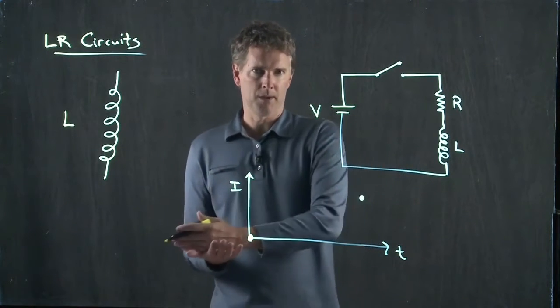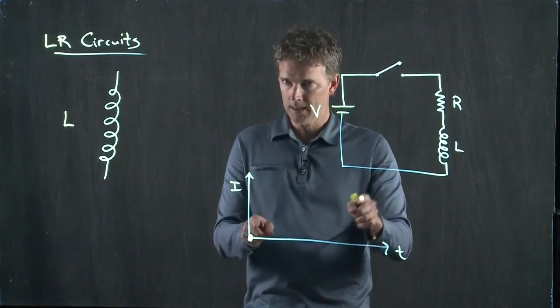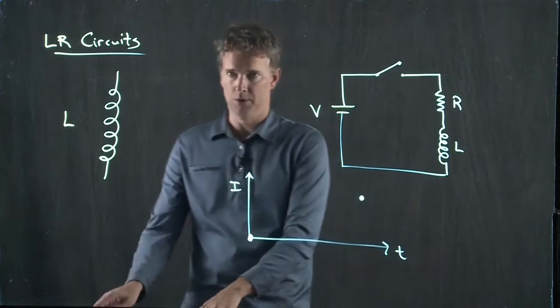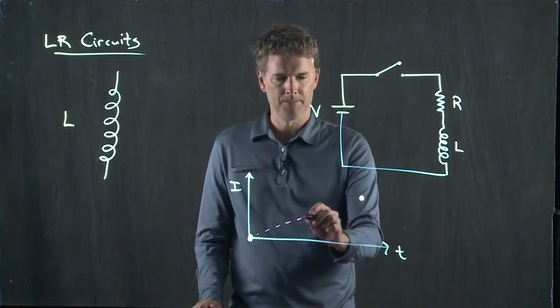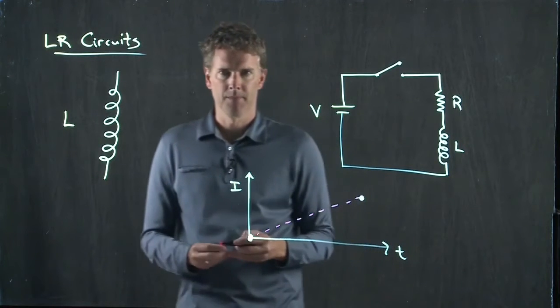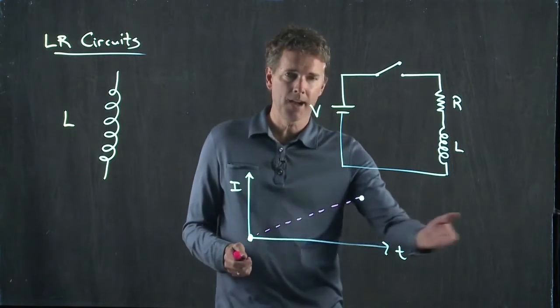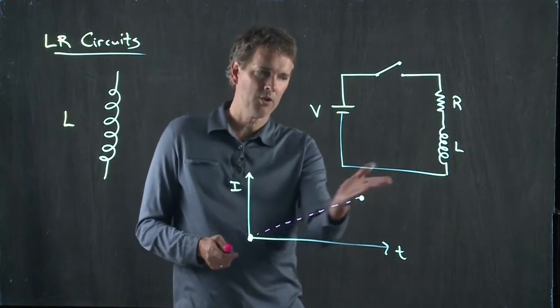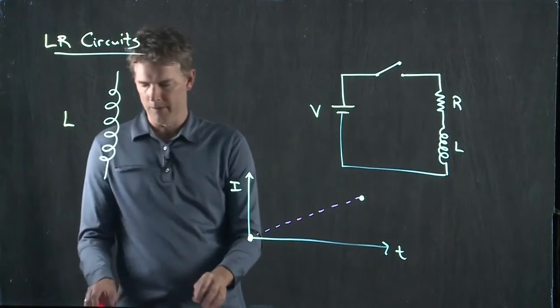So just like we talked about with capacitors, when we have two points and we want to connect them, we have a bunch of different options. One option is this, a straight line. But a straight line doesn't make a lot of sense because as time goes on, it says that current would just keep going up and up and up. So we don't like that one very much.